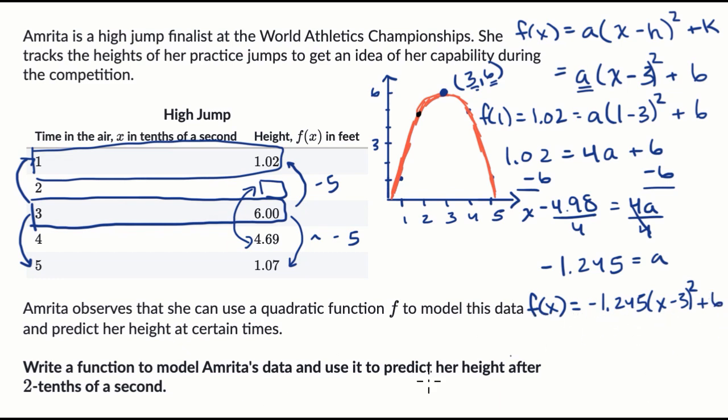And then we can now use this to predict her height after two tenths of a second, or estimate, really. So f of two is equal to negative 1.245 times two minus three squared plus six. Two minus three is negative one. You square that, you just get one. So it's really going to be equal to six minus 1.245.